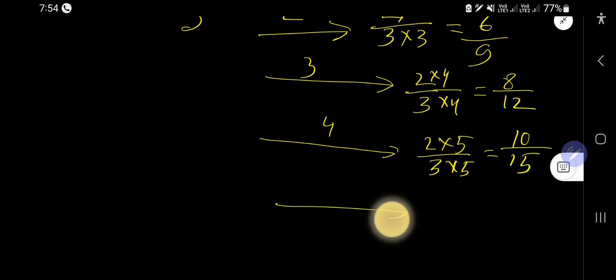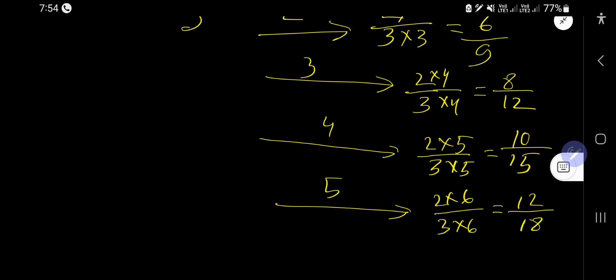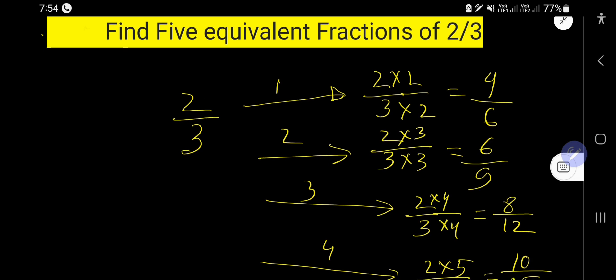And this is the fifth equivalent fraction. Just multiply here by 6. 6 times 2 is 12, and 6 times 3 is 18. So these are the five equivalent fractions of 2 over 3.